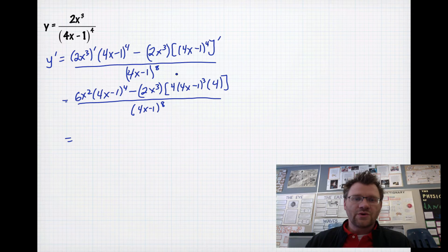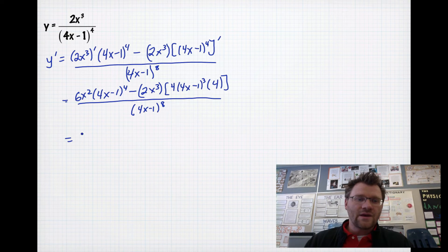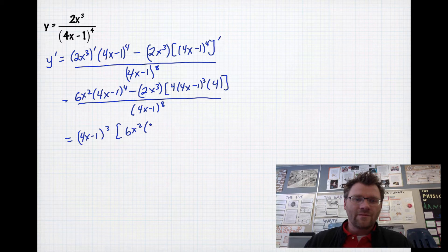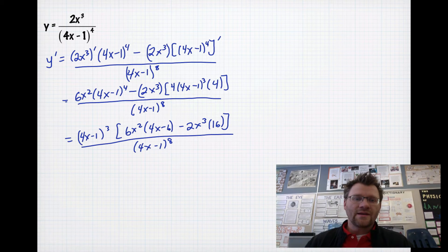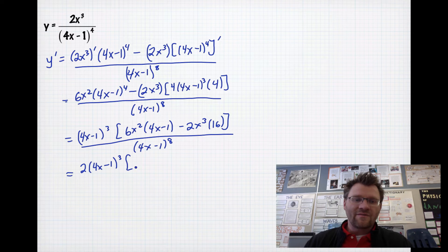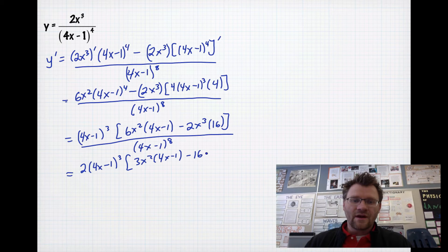We have two terms, so we take out a greatest common factor. From the first term I have four (4x minus 1) factors, but the second term only has three, so I can only take out three. That leaves 6x squared multiplied by (4x minus 1). From the second term I'm left with negative 2x cubed, and 4 times 4 gives 16. That's all over (4x minus 1) to the eighth power. I can also take out a factor of 2, leaving 3x squared times (4x minus 1) minus 16x cubed, all over (4x minus 1) to the eighth power.